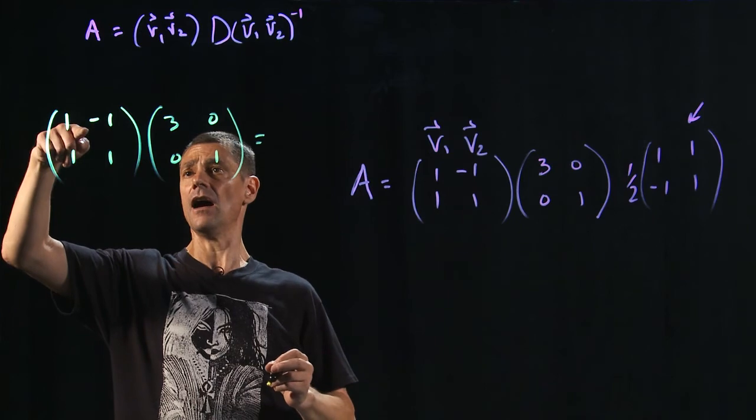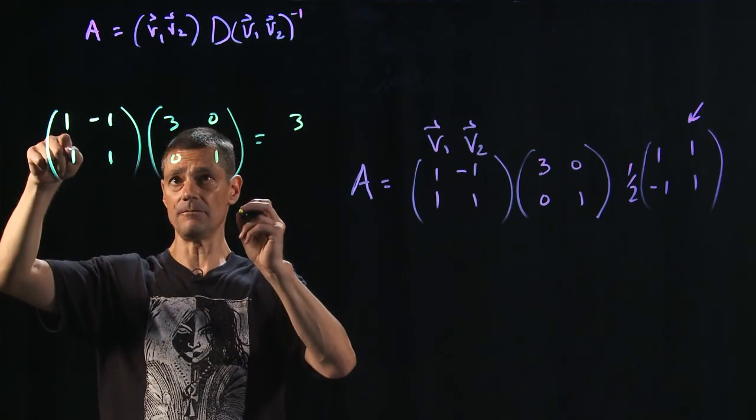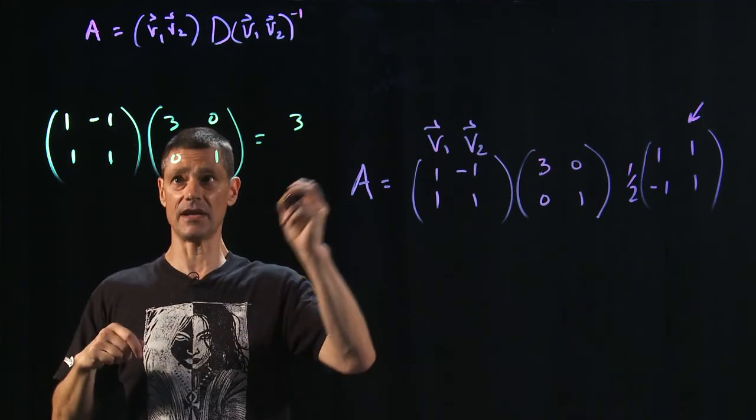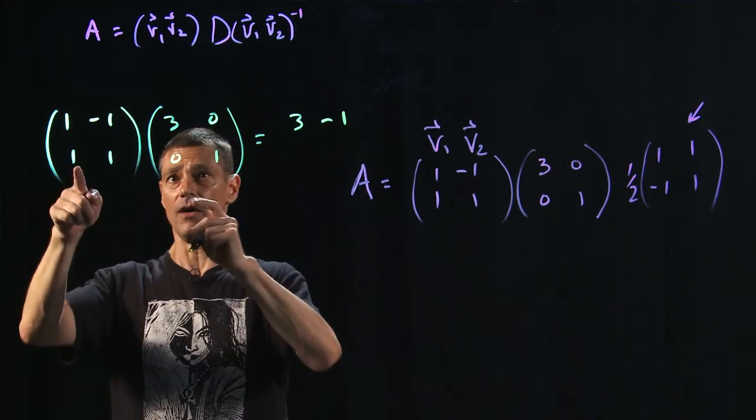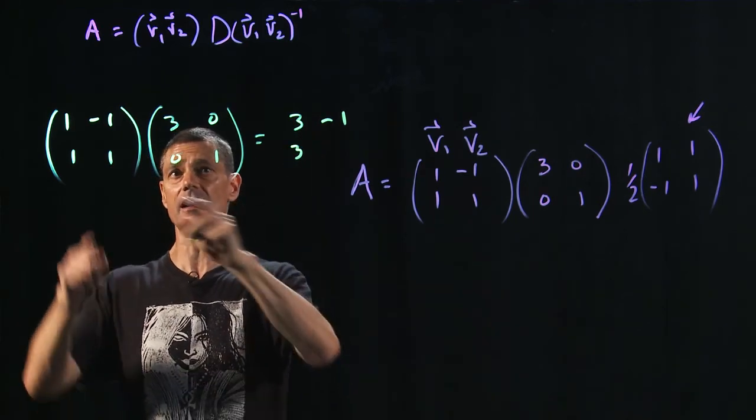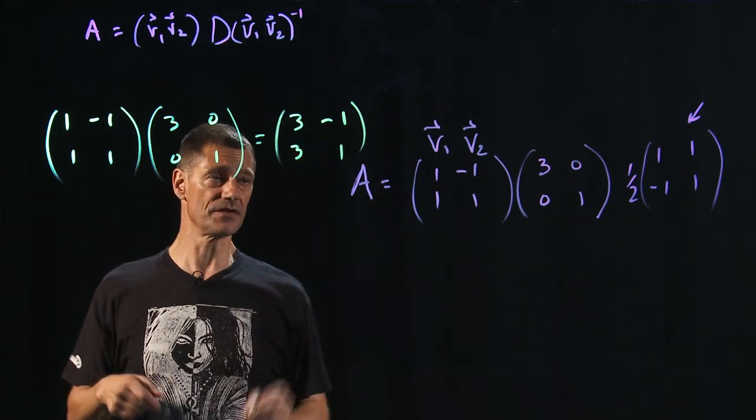1 times 3 minus 1 times 0 is just 3. 1 times 0 minus 1 times 1 is minus 1. 1 times 3 plus 1 times 0 is 3. And 1 times 0 plus 1 times 1 is 1. So this is the first part.